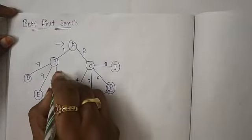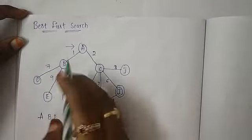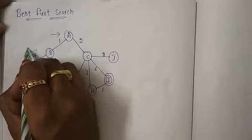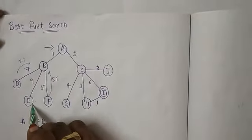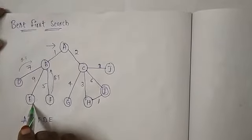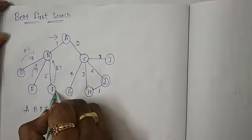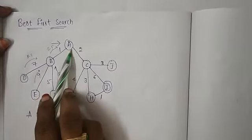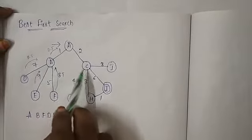Once A is covered, we will backtrack to B. B can visit nodes D and E, so we will visit D. D is not our goal node and D is not having any child, so we will backtrack to B. Now we are at B and for B we have only one child node that is E, and we will visit E now.